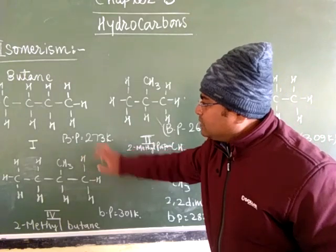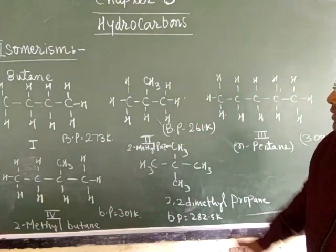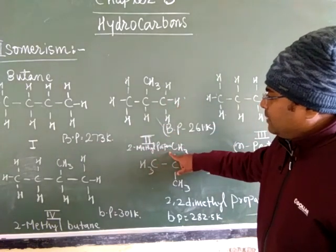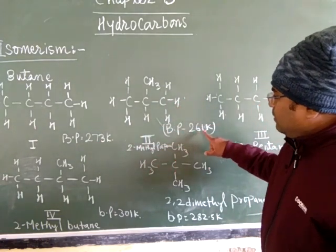But the isomer of butane, that will be 2-methyl propane, the boiling point will be 261 kelvin. Can you see the butane isomer difference?